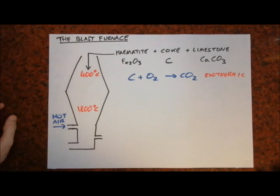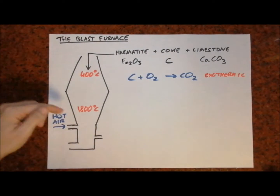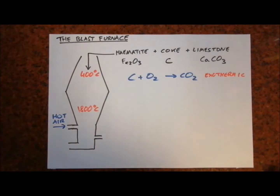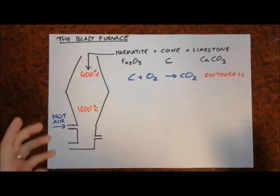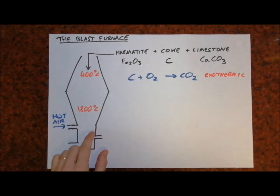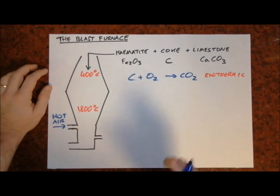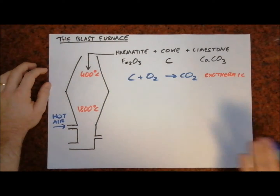The melting point of iron is 1538 degrees. You don't need to know these temperatures off by heart. At very high temperatures, the carbon dioxide is reduced by more coke to form carbon monoxide.